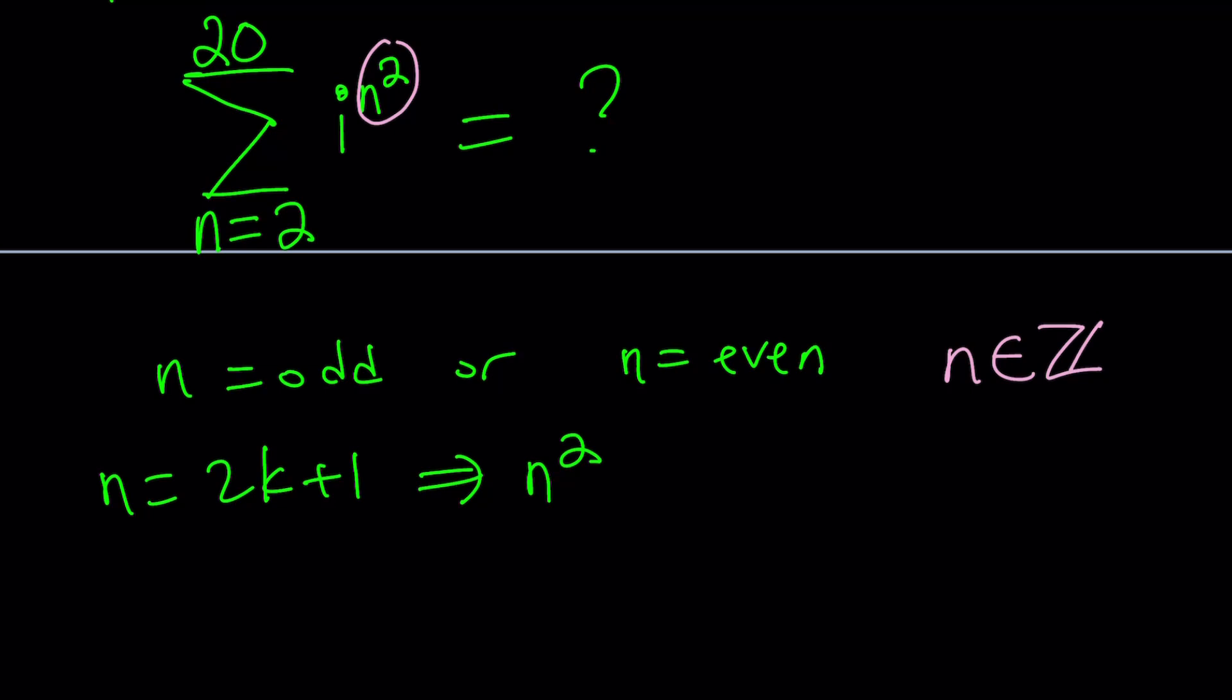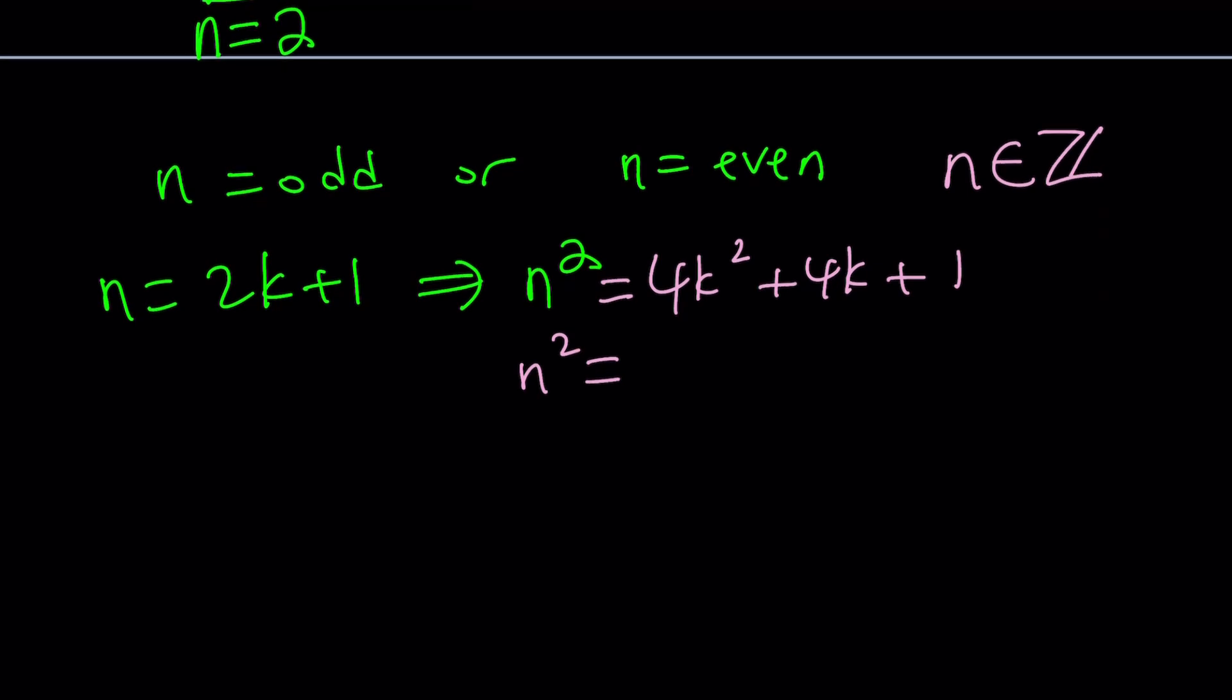So now n equals 2k plus 1, k is an integer. And now n squared is going to be 4k squared plus 4k plus 1. Awesome. Now, one thing to keep in mind here is the fourth power of i and any power that's multiple 4 is going to give you 1. So it might be helpful to take out a 4, right?